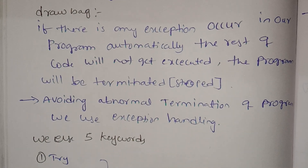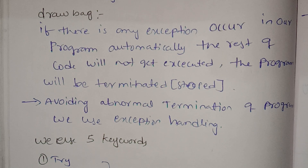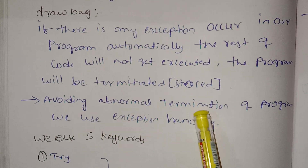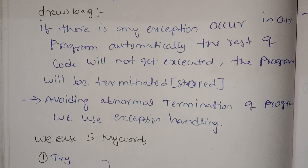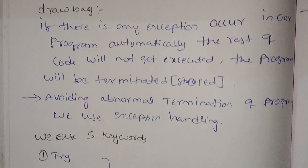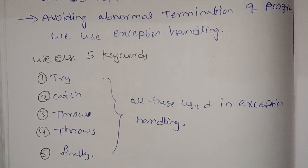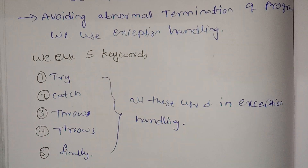The program will be terminated and stopped. To handle this drawback, if there is any exception that occurs in our program, we will use exception handling. Exception handling uses five keywords: try block, catch block, throw, throws, and finally. Using these five keywords, we can solve abnormal problems.